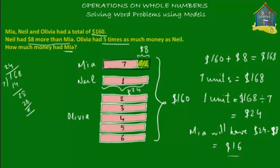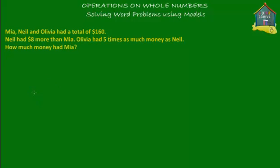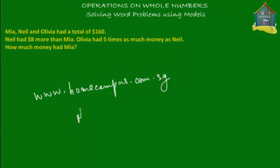Mia had $16. So that's that about this word problem. For more word problems and more practice exercises, don't forget to visit www.homecampus.com.sg. Practice because practice makes perfect. This is Em signing off for now. Bye-bye.